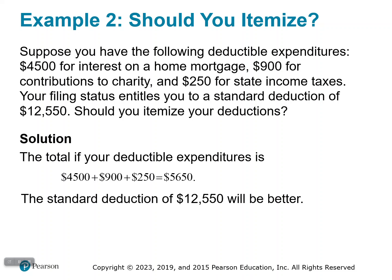Suppose you have the following deductible expenditures: $4,500 for interest on a home mortgage, $900 for contributions to charity, and $250 for state income taxes. Your filing status entitles you to a standard deduction of $12,550. Should you itemize your deductions?